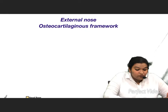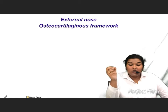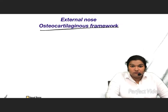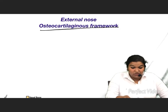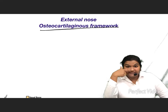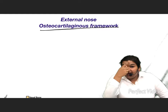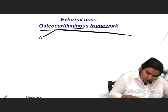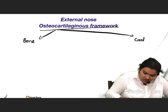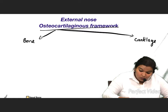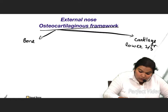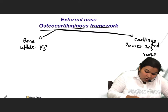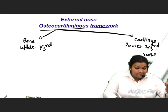Let us move towards the external nose osteocartilaginous framework. As the name suggests, osteo means bone and cartilaginous means cartilage. When we feel our nose, we find two consistencies — the soft and mobile cartilage, and at the top, we get the hard, immobile bone. The lower two-thirds of the nose is formed by cartilage and the upper one-third of the nose is formed by bone.